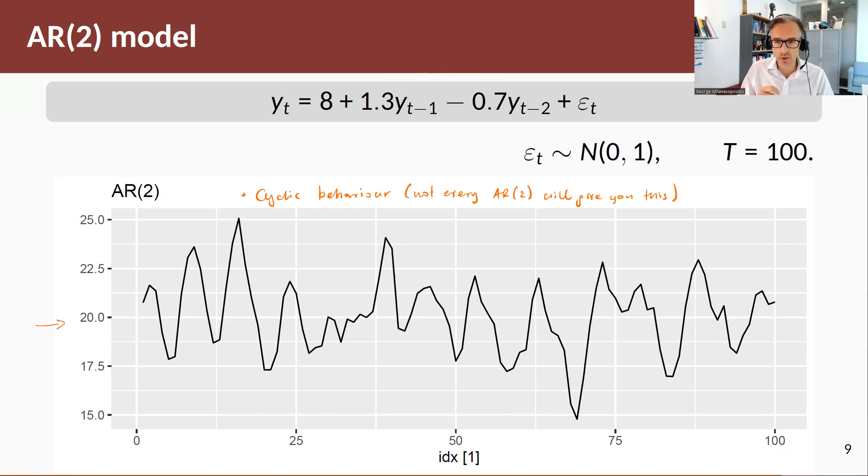Actually, these were discovered by Yule back in the early 1900s, where he was studying the dark spots of the sun. He realized these have cycles, and the average length I think was around 11 years. Because of that behavior, he discovered this type of model.